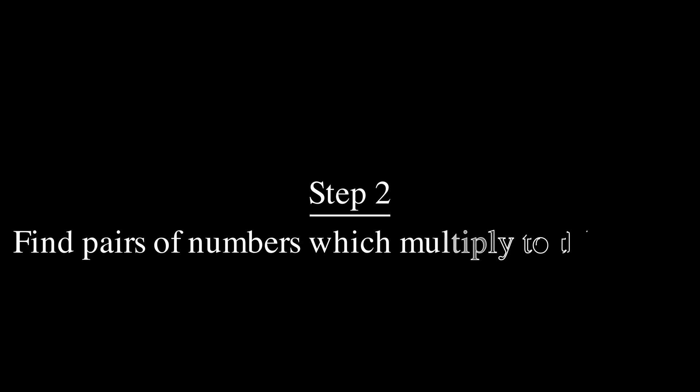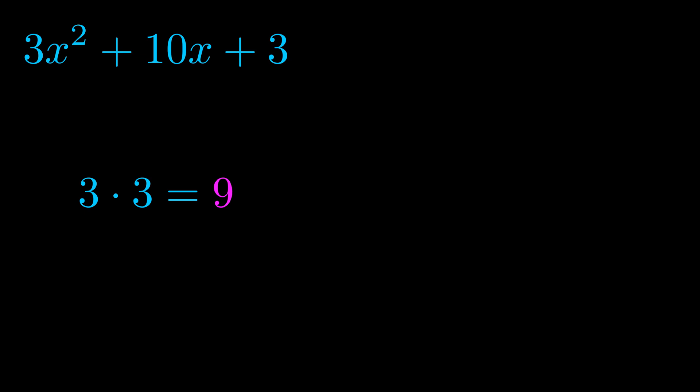Step two is to try to find all of the pairs which multiply to this number. Now it turns out you don't really need to find all of them, but go ahead and write down as many numbers as you can that multiply to the magenta value for now. Pause the video and resume when you're ready to continue. Okay, here's what I came up with.